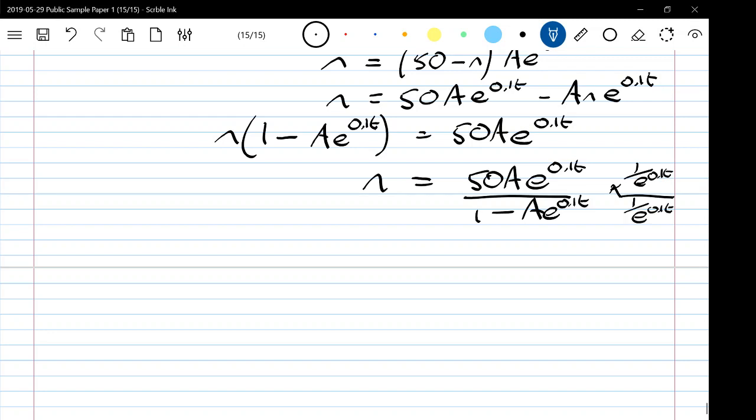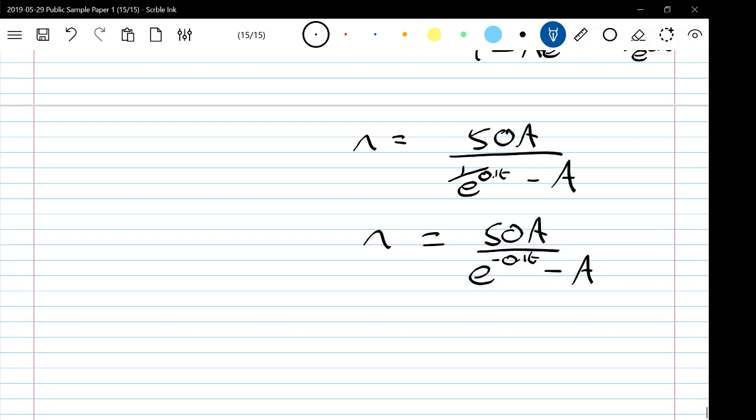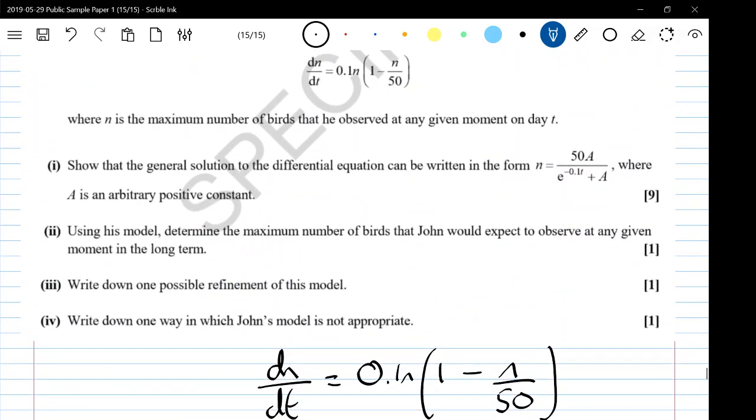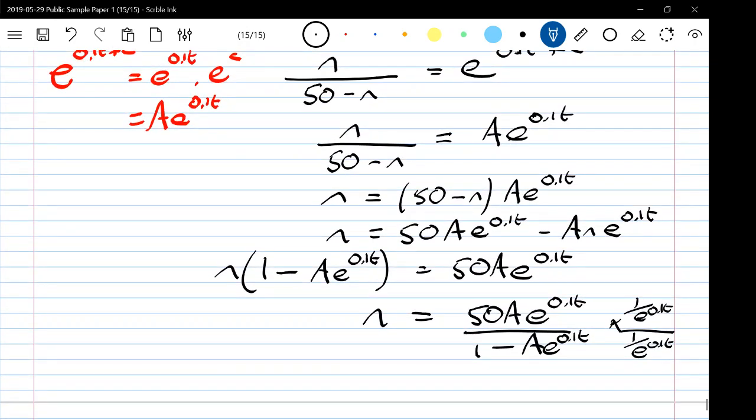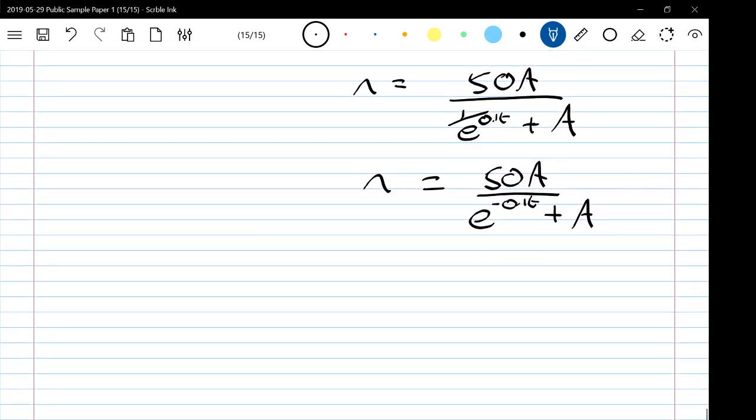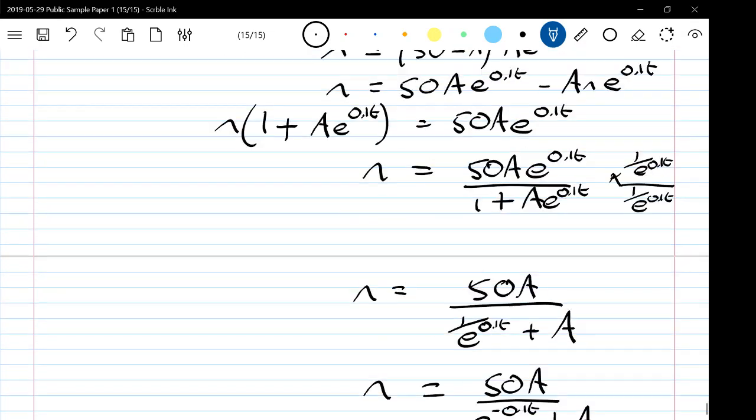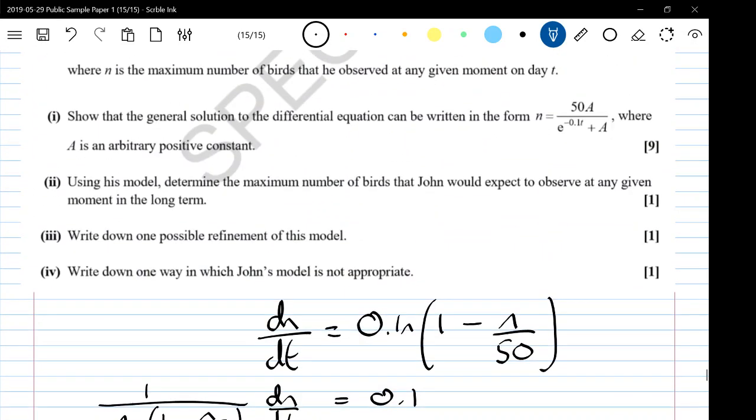Let's divide top and bottom by 1 over e to the 0.1t to give us n equals 50A over e to the 0.1t minus A, or 50A over e to the minus 0.1t minus A. It was except I have a minus instead of a plus. If I rearrange that, that becomes a plus there. A neat little illustration that sometimes when you're aiming for an answer you make a mistake, then go back and spot it and sort it out.